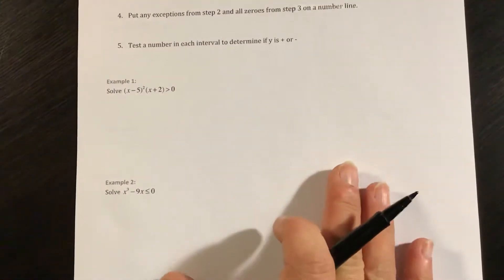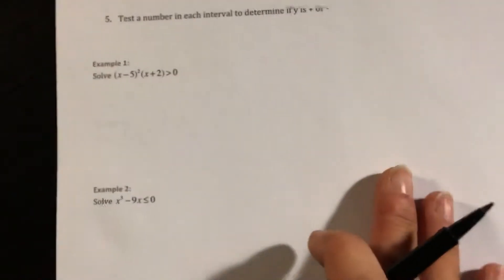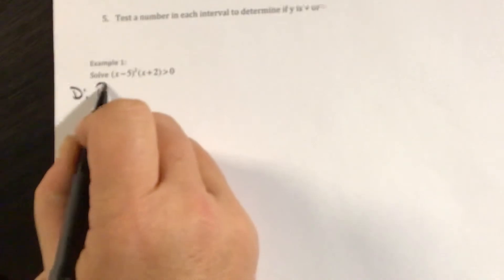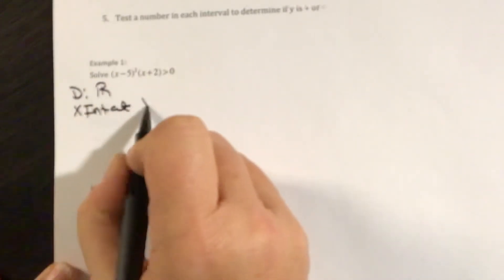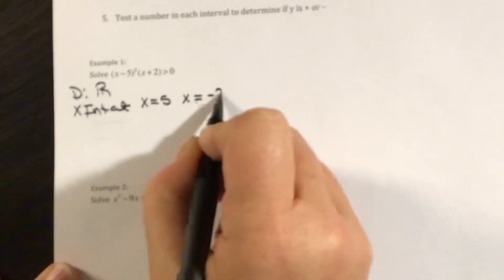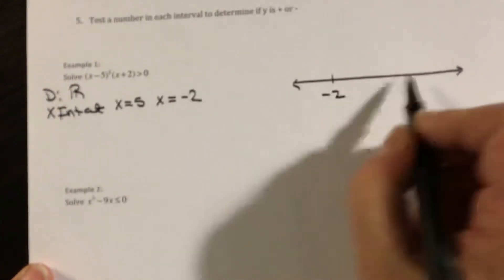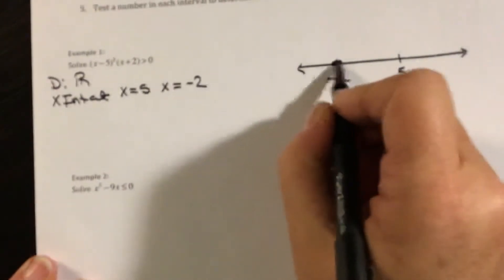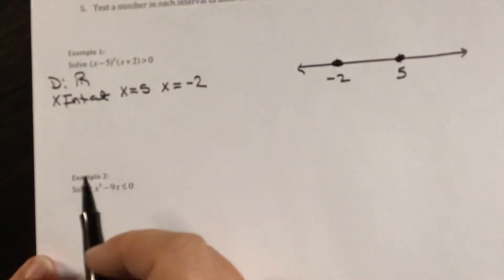In example one, I have a polynomial function and we're looking for numbers greater than zero, so the y value is greater than zero. First, identifying the domain: my domain is all real numbers because it is a polynomial. Looking for my x-intercepts, I have x-intercepts at x equals 5 and x equals negative 2. On my number line, I'm going to put a point at negative 2 and a point at 5, and then look at each of these regions individually to determine if they're positive or negative.